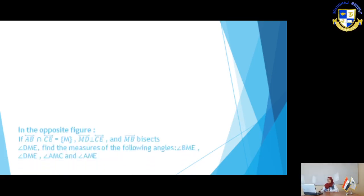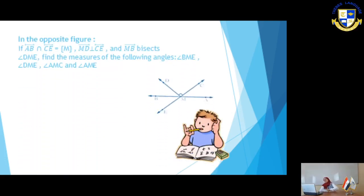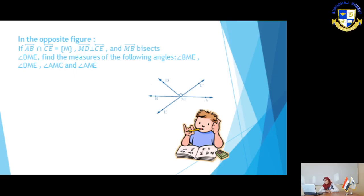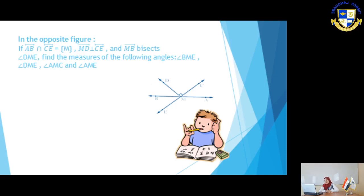Let's move to the last example. In the opposite figure, if AB straight line intersects CE straight line at point M, and ray MD is perpendicular to CE straight line, and MD bisects angle DME — find the measures of: angle BME, angle DME, angle AMC, and angle AME.